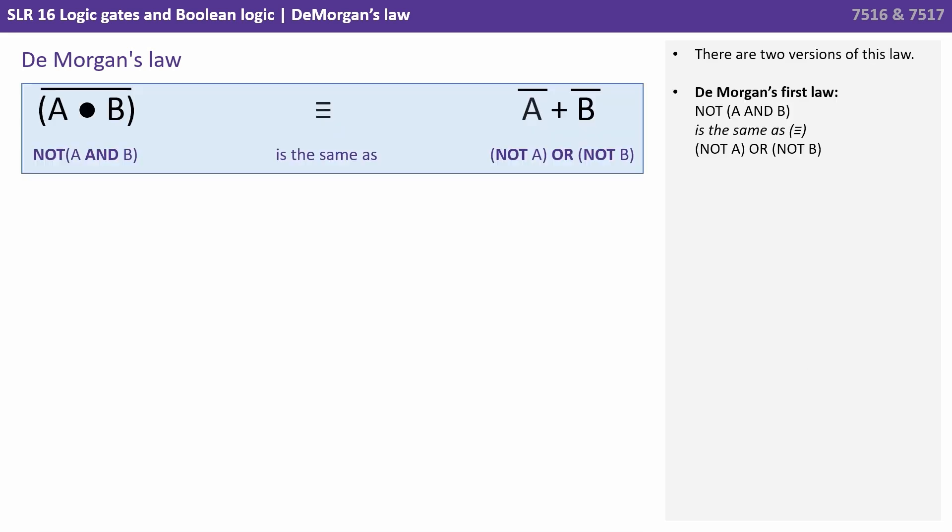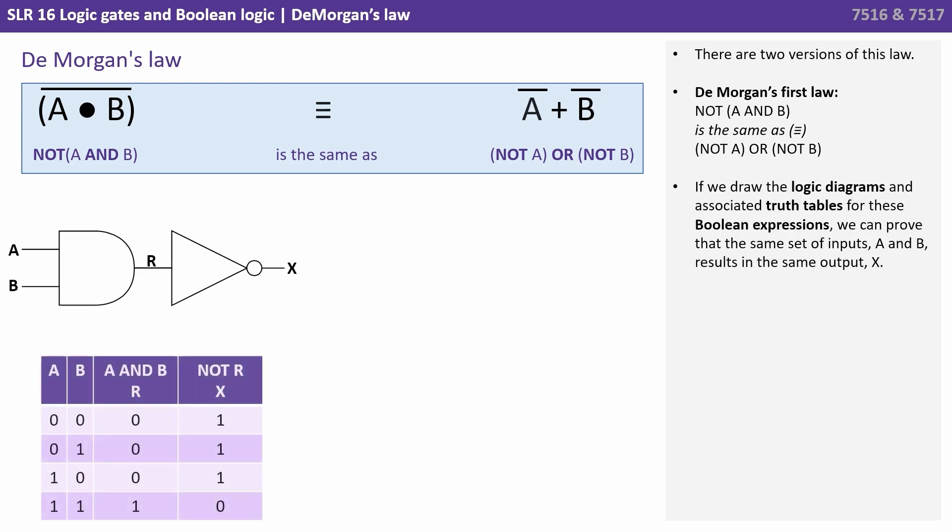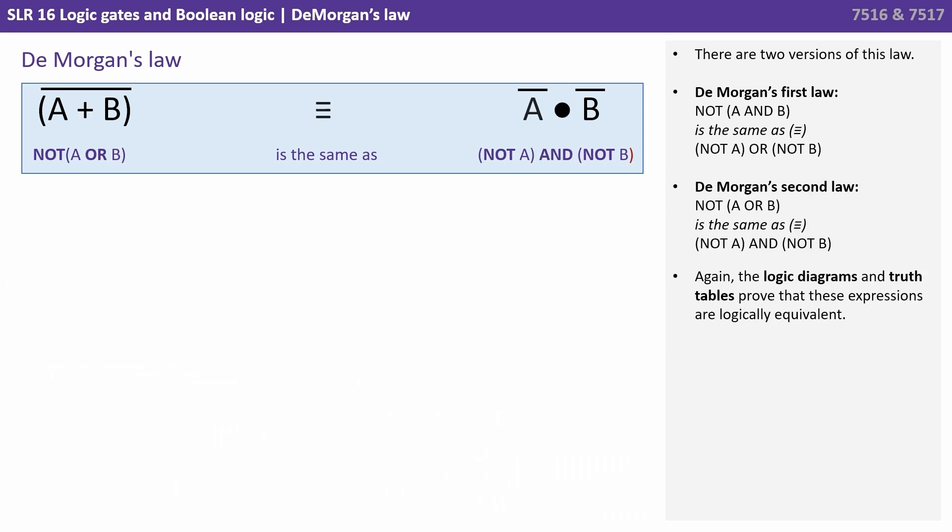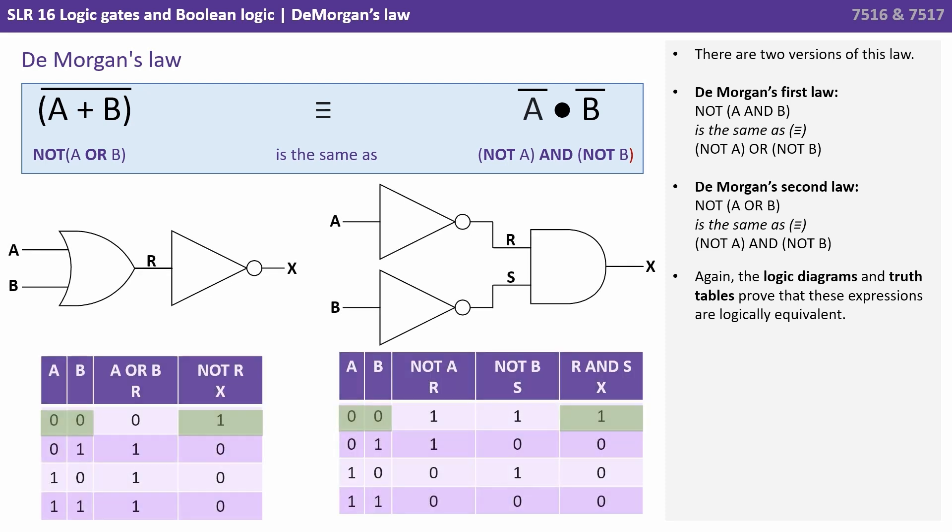There are two versions of this law. We have De Morgan's first law, NOT A and B is the same as NOT A or NOT B. If we draw the logic diagrams and the associated truth tables for these Boolean expressions, we can prove that the same set of inputs A and B results in the same output X. We also have De Morgan's second law. This is inverting ORs to AND. So it says NOT A or B is the same as NOT A and NOT B. And again, the logic diagrams and truth tables prove that these expressions are logically equivalent.